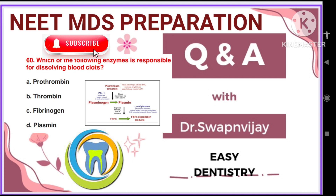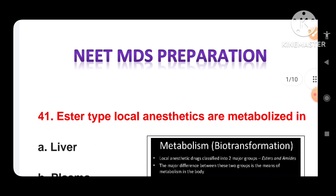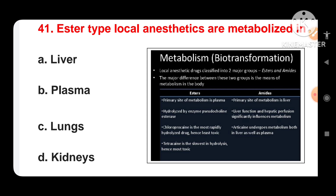Now let's start with this question: ester-type local anesthetics are metabolized in — options are liver, plasma, lungs, kidneys. Local anesthetic drugs are classified into two major groups: esters and amides. Esters are metabolized in plasma, amides are metabolized in liver. Esters are hydrolyzed by the enzyme pseudocholinesterase, and amides are metabolized by liver function and hepatic perfusion. Among esters, chloroprocaine is more rapidly hydrolyzed, making it least toxic, while tetracaine is slowest in hydrolysis and most toxic. Notably, articaine is an amide that undergoes metabolism both in the liver and plasma.